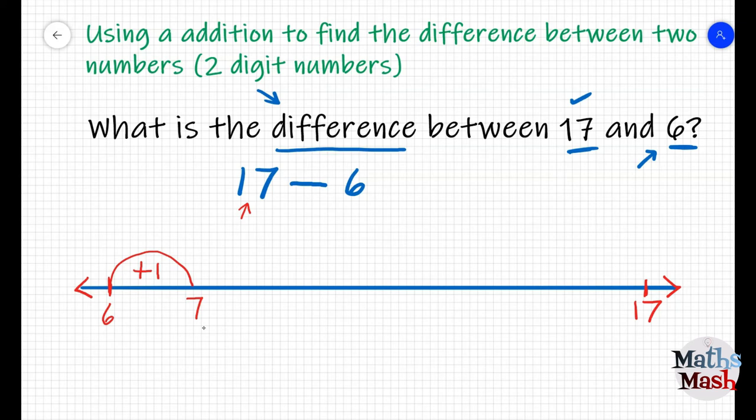Every time the frog hops to the new number, you have to write where he lands on the number line. This is a big help when you're trying to work out the answer. So, in this case, we make a jump of one and I landed on seven.